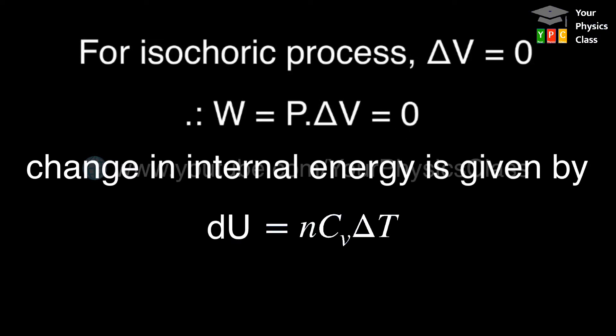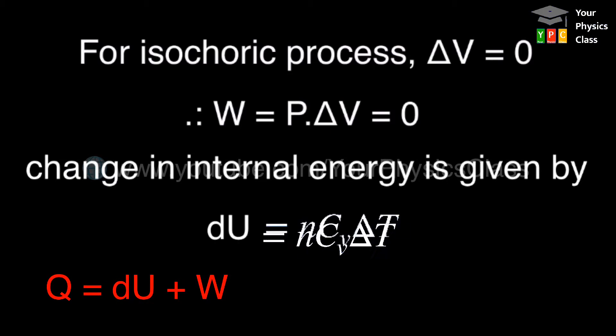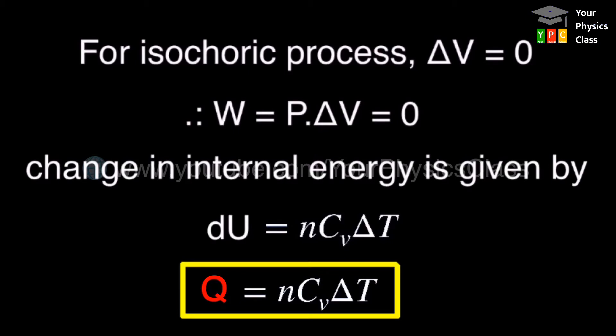Now the change in internal energy is given by n times CV delta T, where n is the number of moles of a gas taken in the container, and CV is its specific heat at constant volume, and delta T is the rise in temperature. So according to first law of thermodynamics, we can have Q equals change in internal energy, that is n times CV delta T.